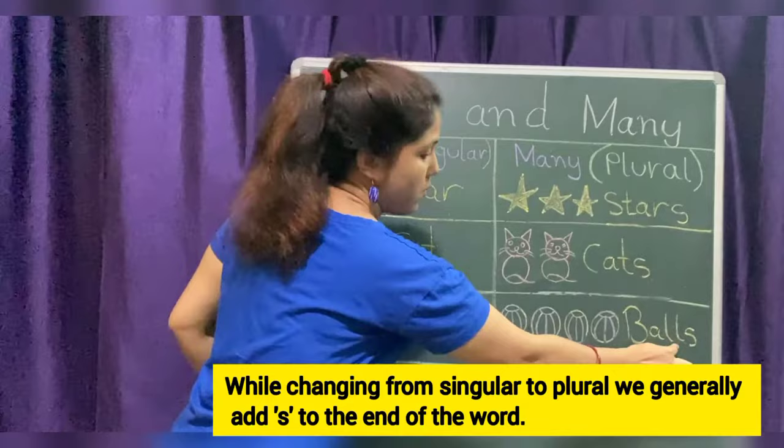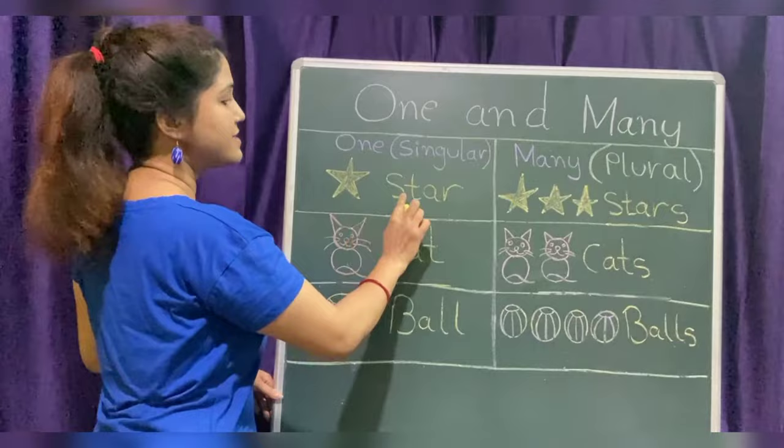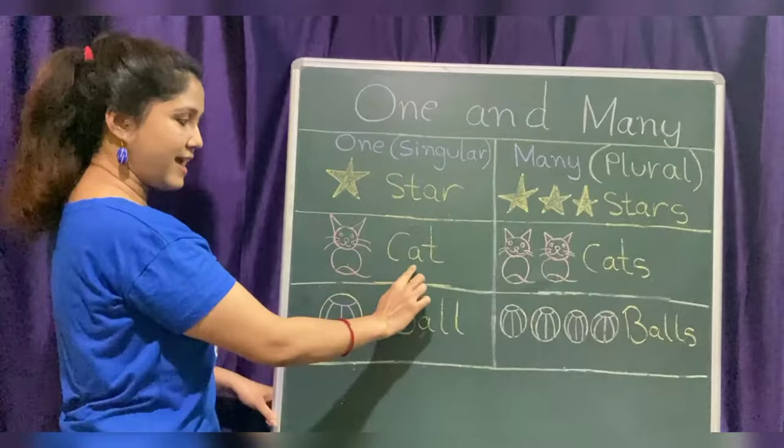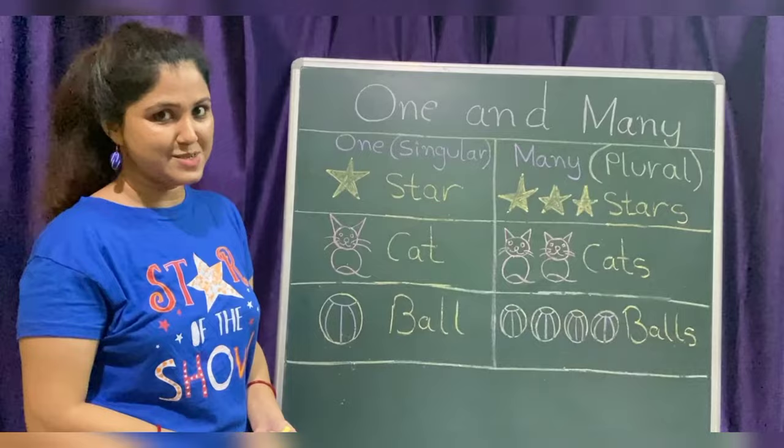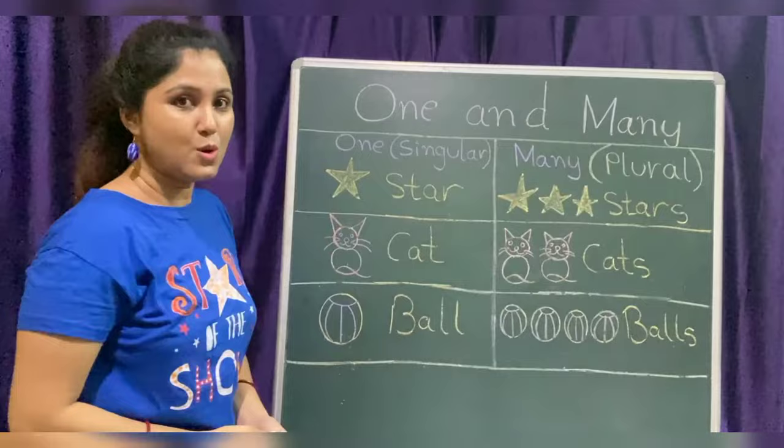So children, let's revise. One star, many stars. One cat, many cats. One ball, many balls. So children, I hope you understood the concept of one and many. What you have to do? You have to practice this at your home. Bye-bye.